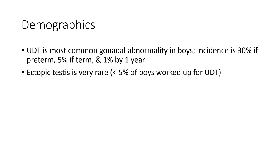Demographics: UDG is the most common congenital abnormality in boys. Incidence is up to thirty percent if premature, and five percent at birth, reducing to one percent by one year. Ectopic testis is very rare — less than five percent of cases worked up for UDG.